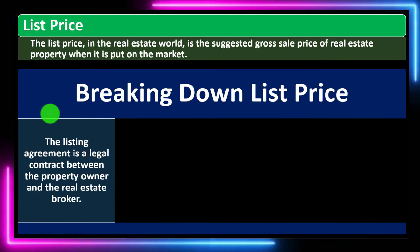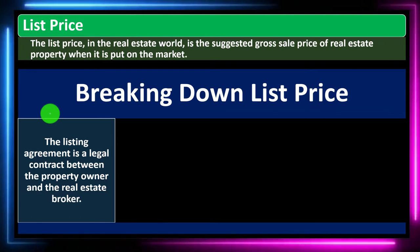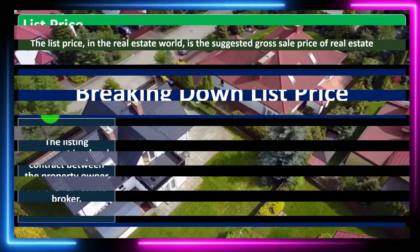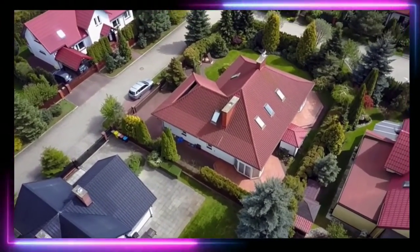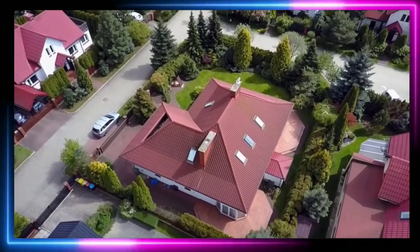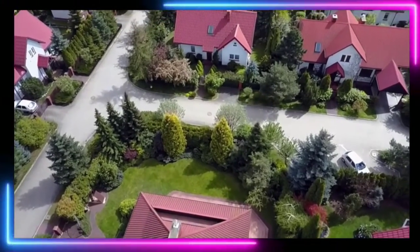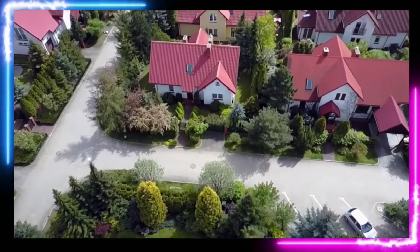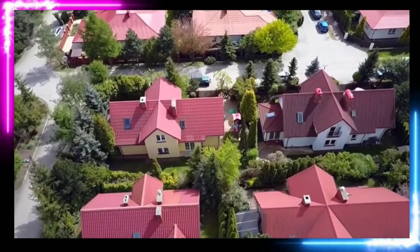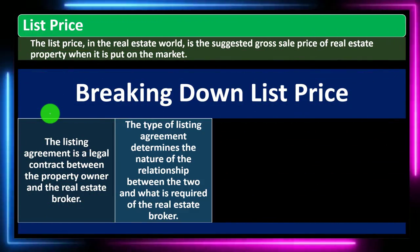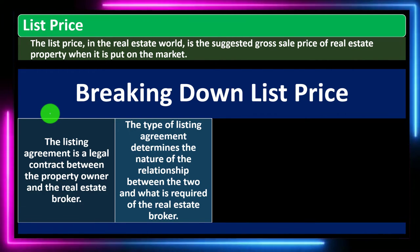Breaking down the list price: the listing agreement is a legal contract between the property owner and the real estate broker. When the owner is thinking about selling property, they will usually work with a real estate broker — the broker essentially being an agent working on the owner's behalf. The contract lays out the terms of their relationship. The type of listing agreement determines the nature of that relationship and what is required of the real estate broker.